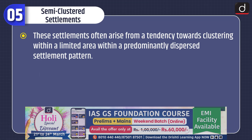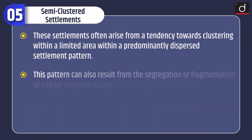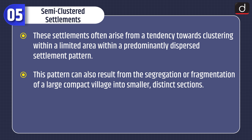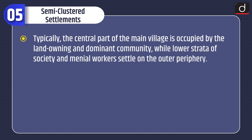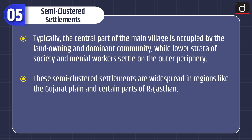Semi-clustered settlements often arise from a tendency towards clustering within a limited area within a predominantly dispersed settlement pattern. This pattern can also result from the segregation or fragmentation of a large compact village into smaller distinct sections. One or more sections of the village society may choose or be compelled to reside slightly away from the main cluster or village. Typically, the central part is occupied by the land-owning and dominant community, while lower strata of society and menial workers settle on the outer periphery. These semi-clustered settlements are widespread in regions like the Gujarat plain and certain parts of Rajasthan.